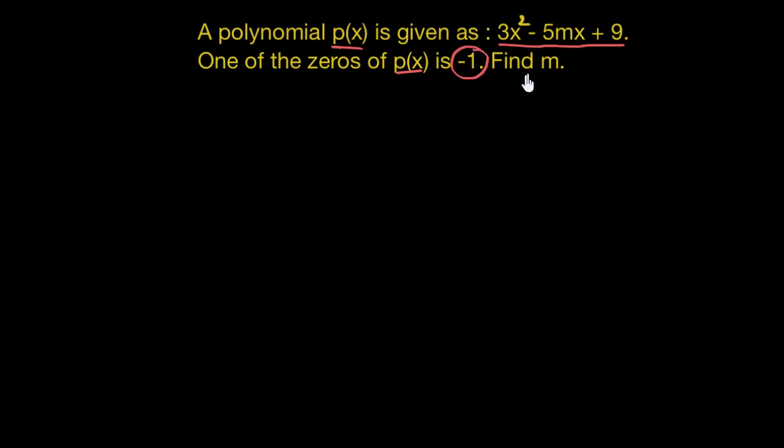We need to find the value of this unknown m here. So now let's focus on what information is given in this question. We are given that the zeros of p of x, one of the zeros of p of x is negative 1.